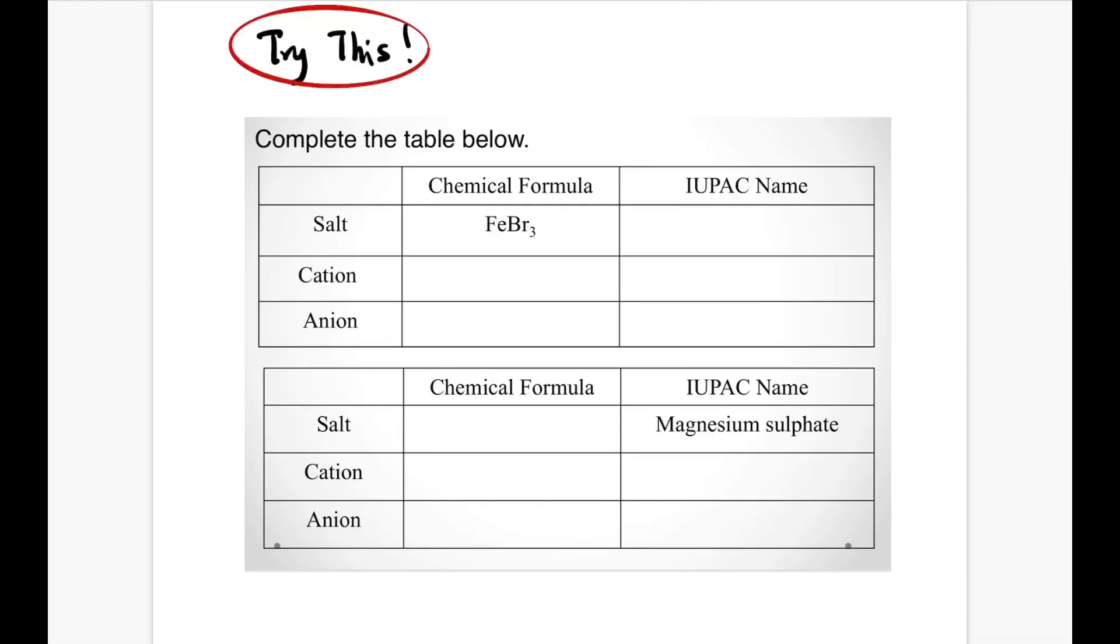Let's do this question together. We have FeBr3, so its anion is Br- and its cation is Fe3+.